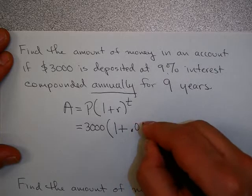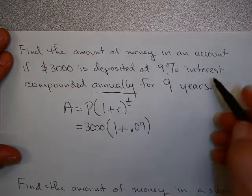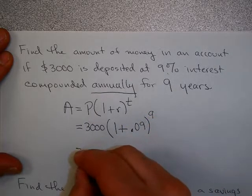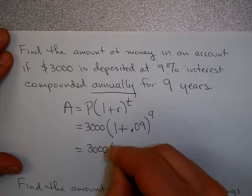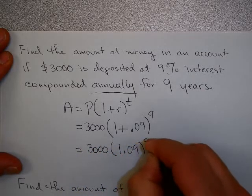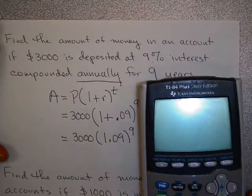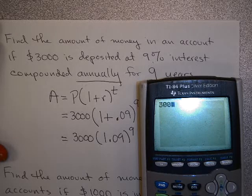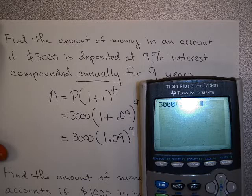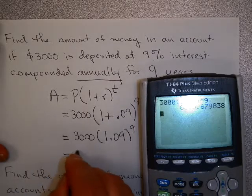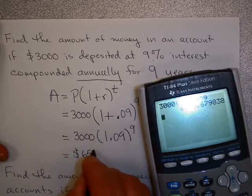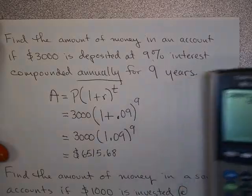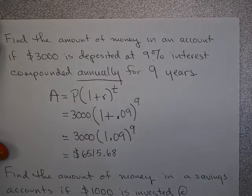9% is 0.09, and this is compounded annually for 9 years, so my time in years is 9. I can write this down like this. Now you take out your calculator and do this calculation. So I'm going to turn my calculator on, and 3,000 times 1.09 raised to the 9th. This ends up to be $6,515.68 if I round it. And that is my answer.